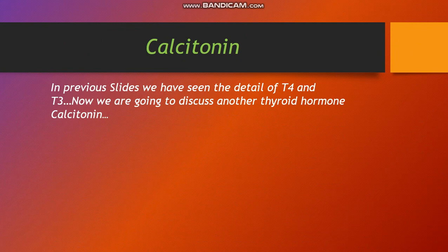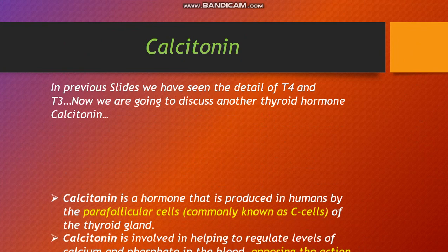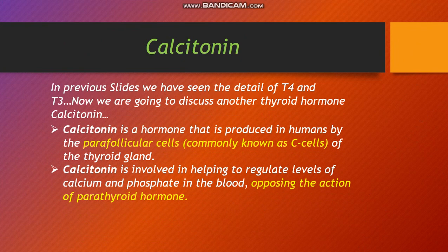Having discussed T3 and T4 in detail, we now turn to another thyroid hormone: calcitonin. Calcitonin is a hormone produced in humans by the parafollicular cells, commonly known as C cells, of the thyroid gland. Calcitonin is involved in regulating levels of calcium and phosphate in the blood, opposing the action of parathyroid hormone.